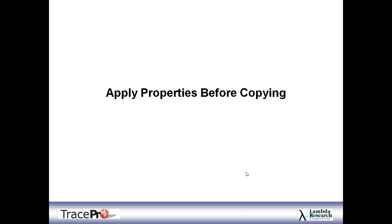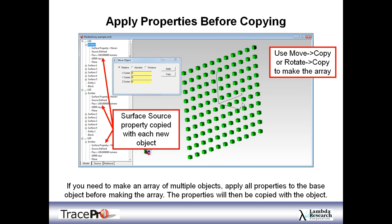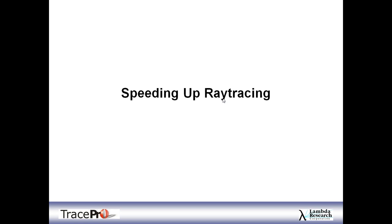A quick tip: apply properties before copying. If you want to make an array of LEDs — say a 100 LED array, 10 by 10 — you can use TracePro's Move Copy or Rotate Copy to make arrays of objects. I always suggest making a single object first as your base, applying all properties to that one object, then doing your Move Copy or Rotate Copy. All the properties are copied with the object, so you're not having to go back into 100 objects and apply properties one at a time.